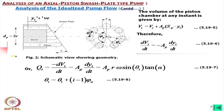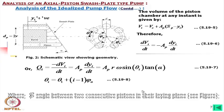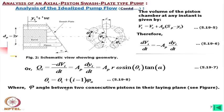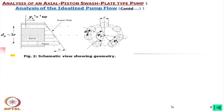The angle θi for the ith piston is given by θ1 plus (i − 1) times the angle between two consecutive pistons, where θ1 is the rotation of piston 1. The angle between two pistons is given by 360°/z, where z is the number of pistons.